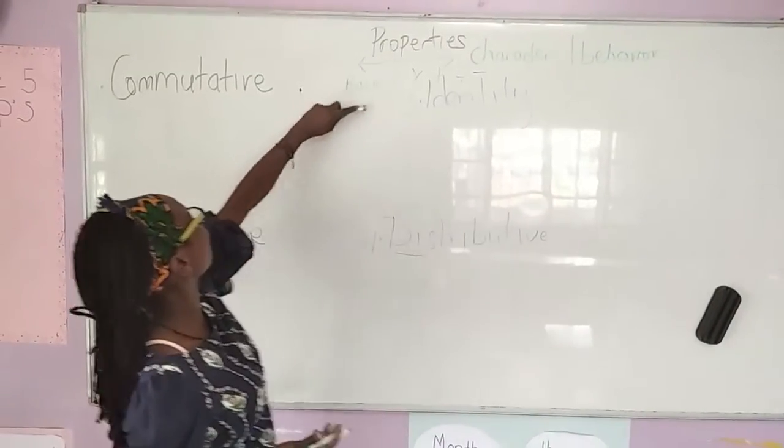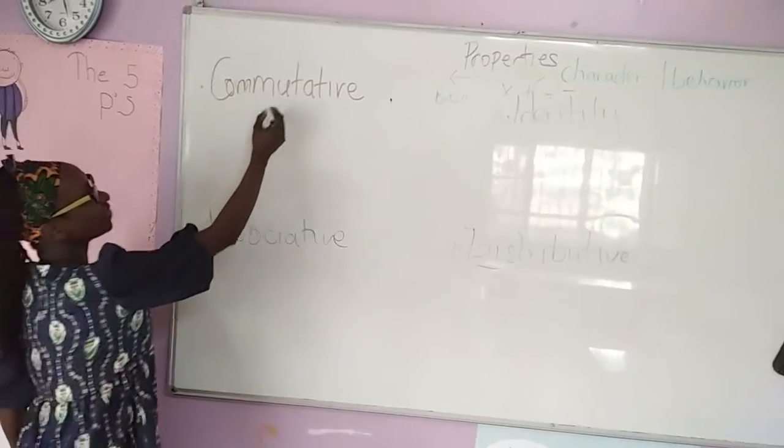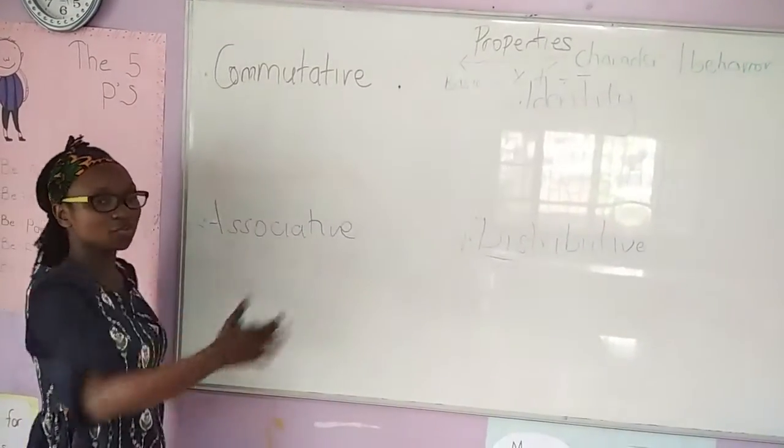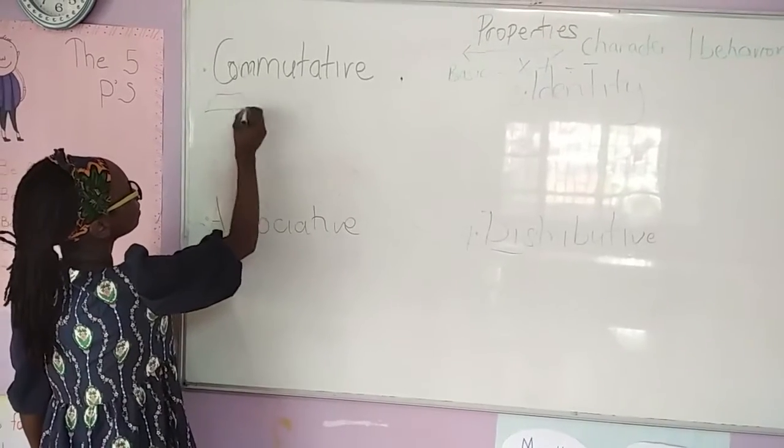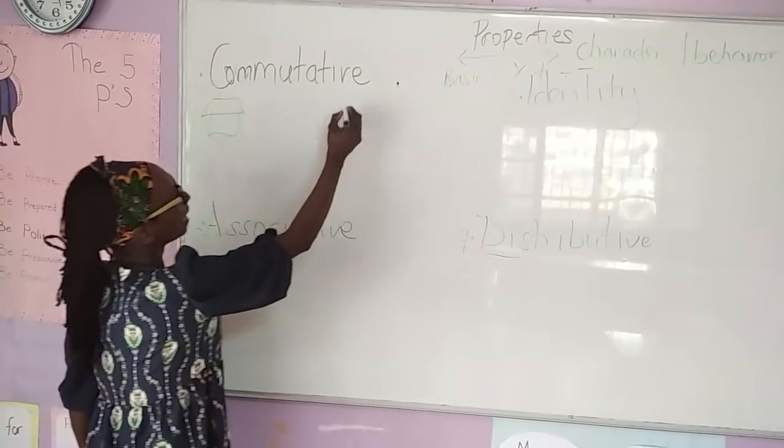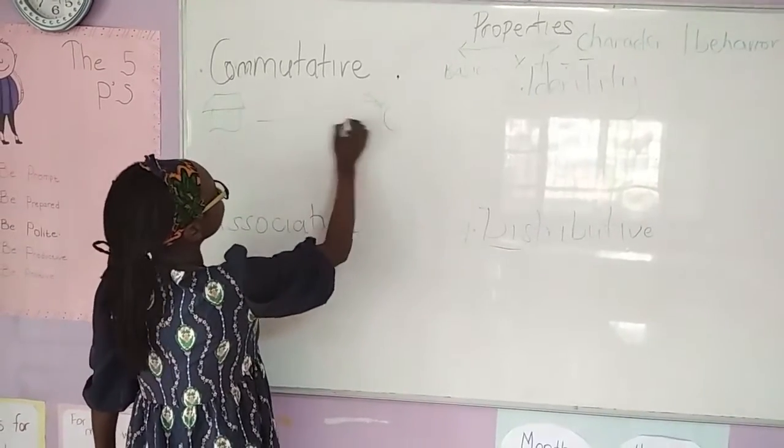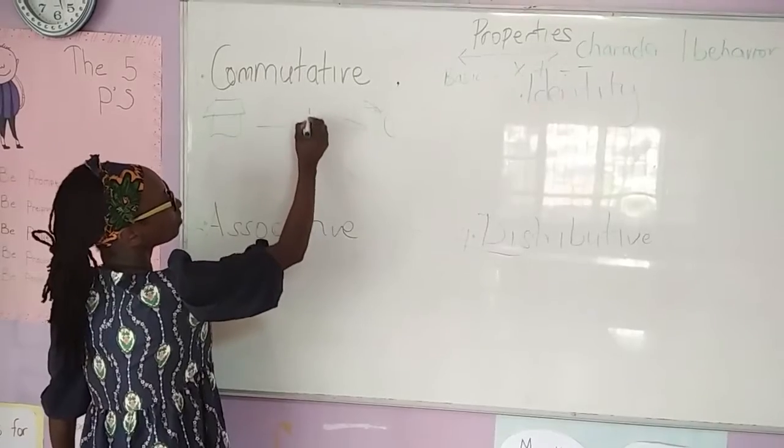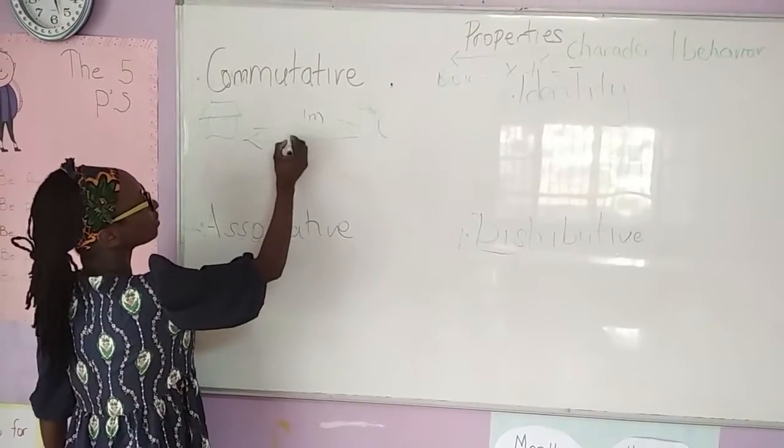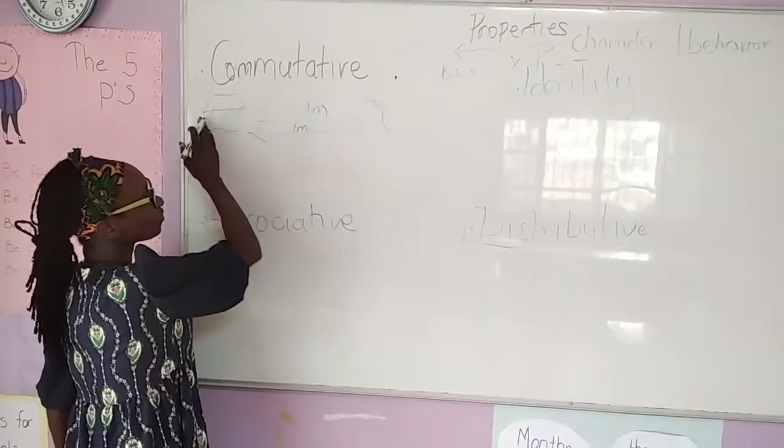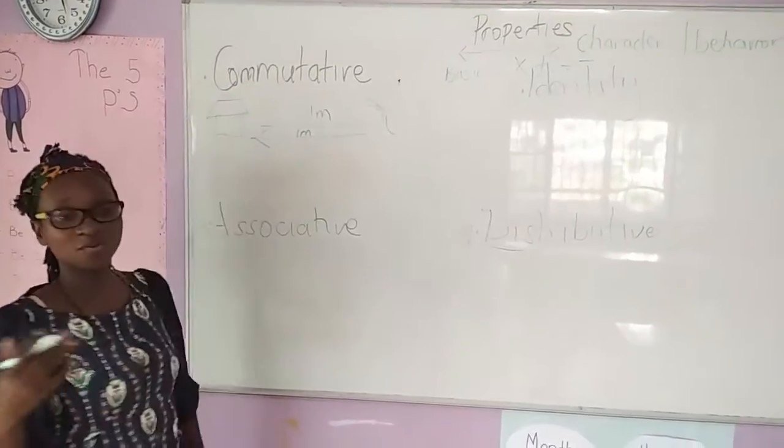The first property we're going to be looking at is commutative. When you look at this word, it comes from the word to commute, to move. For example, your house is here and then the tree is here. Moving to here, it's going to cover you one meter, and moving the other side you're going to cover one meter. Whether you're from this side to this side, it's still one meter. That's what we call commutative.